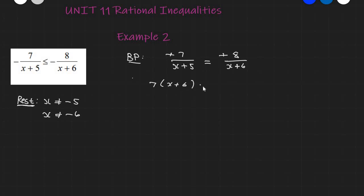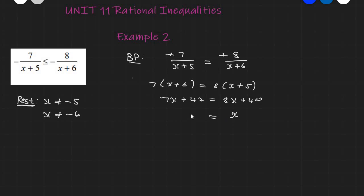This becomes linear and easy: 7X plus 42 equals 8X plus 40, which gives X equals 2. So X = 2 is our boundary point.